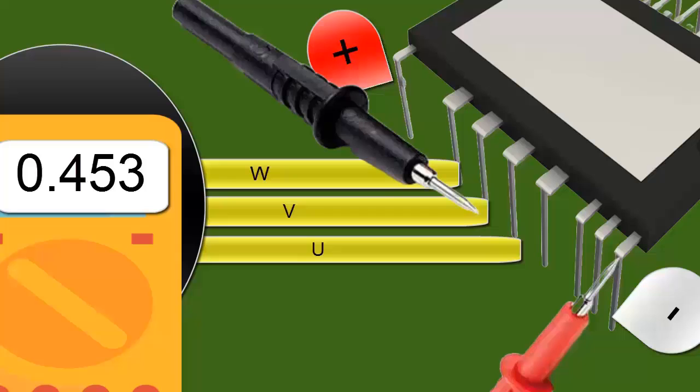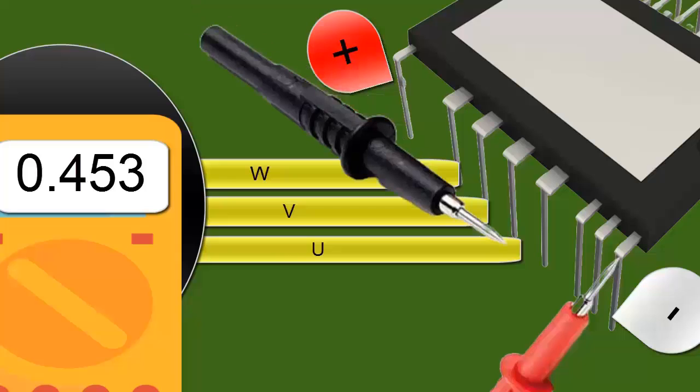12. The measurement obtained between the negative supply and each pin UVW should yield practically the same reading.